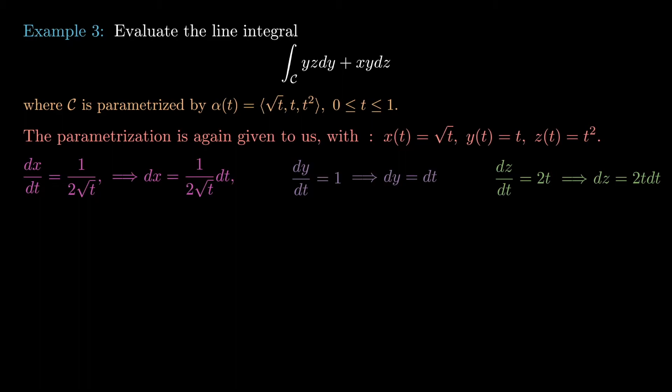Now we just need to insert these appropriately with respect to the parametrization. This line integral becomes the integral from 0 to 1 of t times t squared dt plus the integral from 0 to 1 of √t times t times 2t dt. This is given by replacing y with t, z with t squared, and dy with dt.